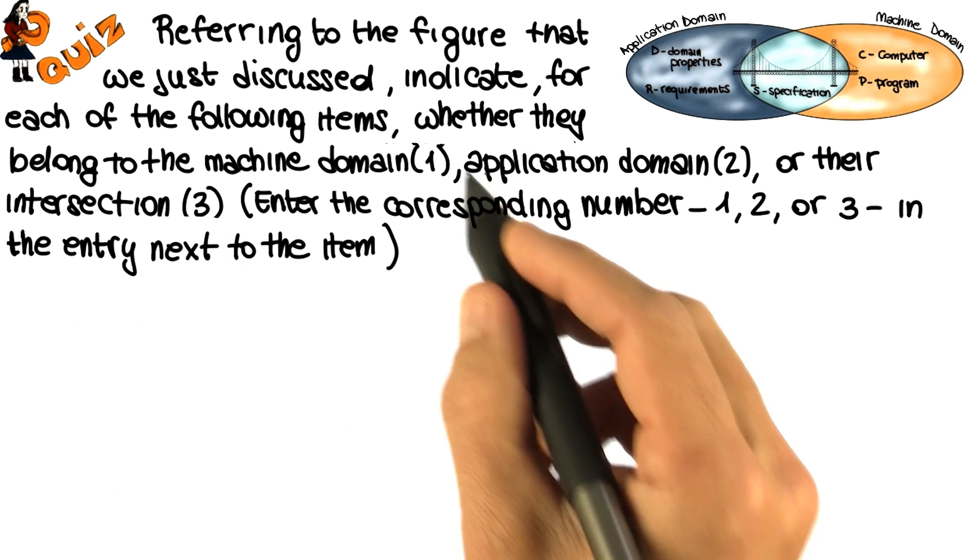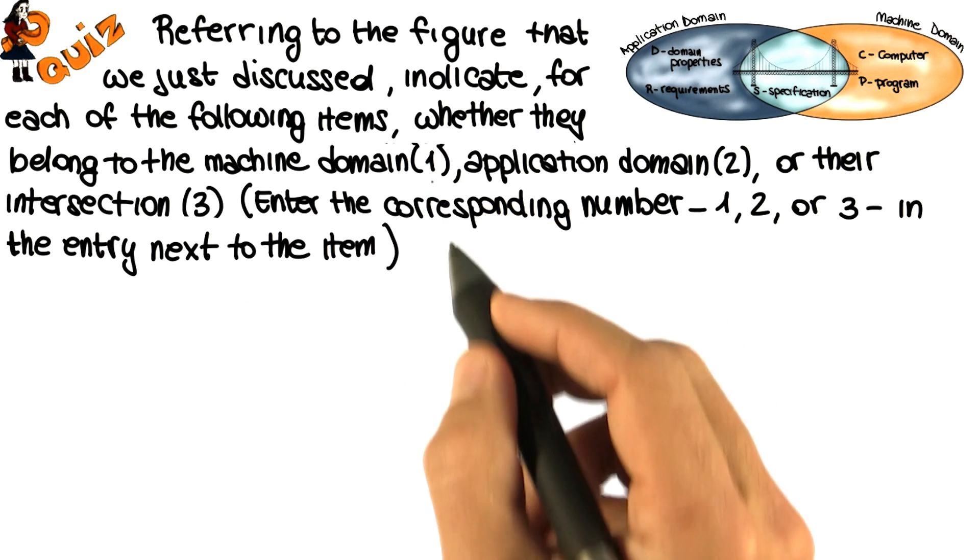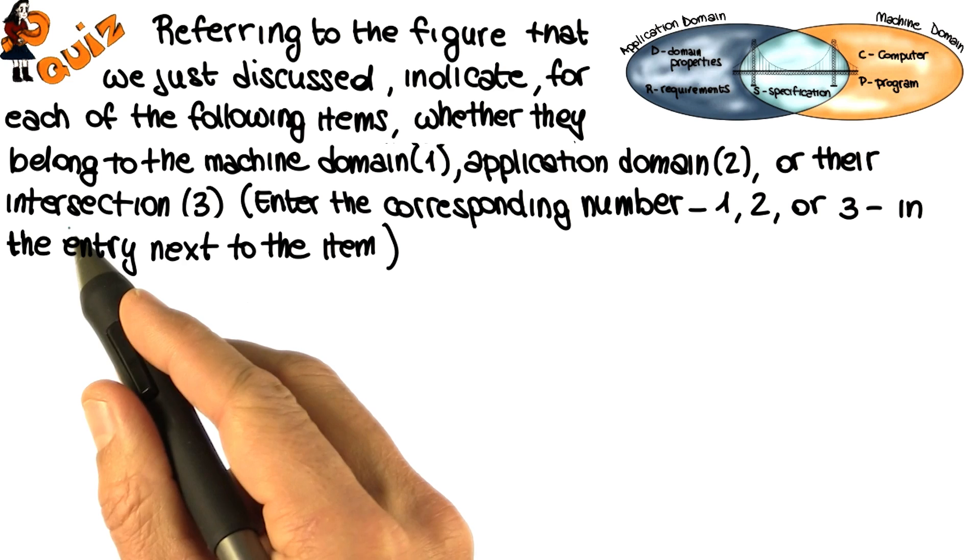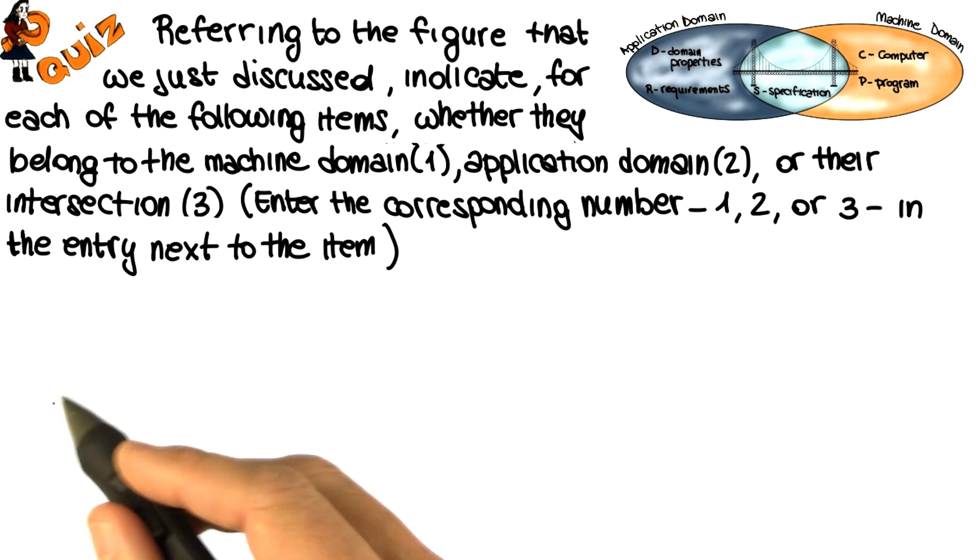whether they belong to the machine domain. In this case, you're going to put a one next to the item, the application domain, in this case you should put a two, or their intersection. And in this case, you should put a three.